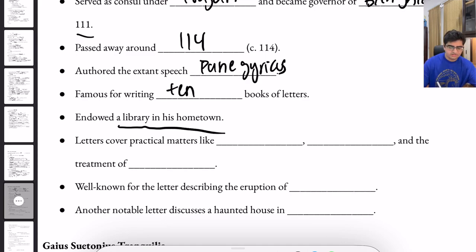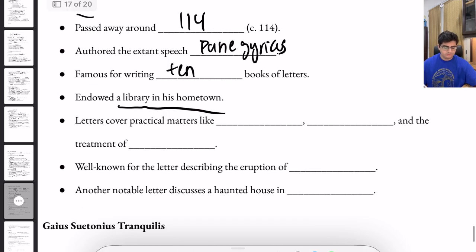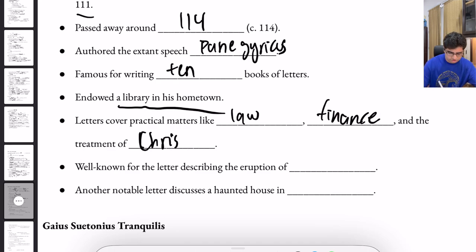He endowed a library in his hometown. The letters covered practical matters like law, finance, and the treatment of Christians. He was well known for the letter describing the eruption of Mount Vesuvius. Another notable letter discusses a haunted house in Athens.